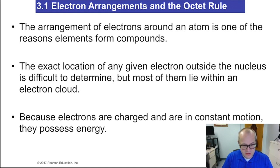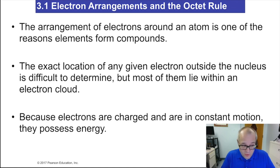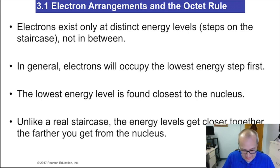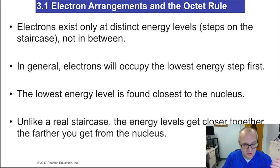Because electrons are charged, they are constantly in motion, and they possess kinetic energy because they're moving. Now, electrons exist at distinct energy levels — like steps on a staircase or rungs on a ladder.